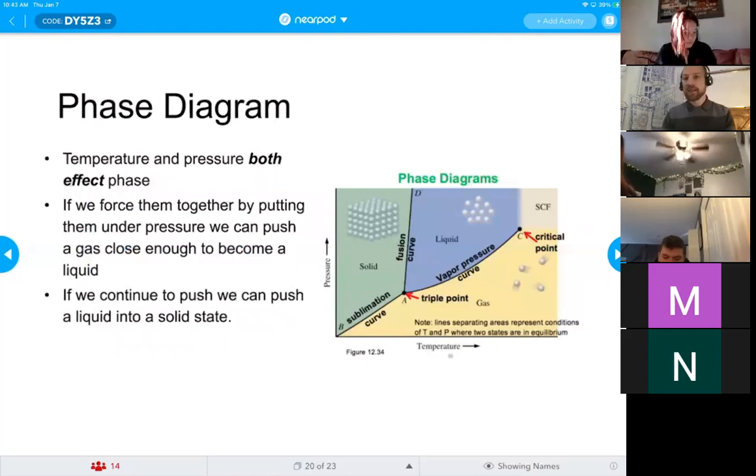Now, we can represent this idea using something called a phase diagram. So if I have something like dry ice, dry ice is interesting because it will never reach a liquid state on Earth. So if this phase diagram, can you see my mouse cursor?